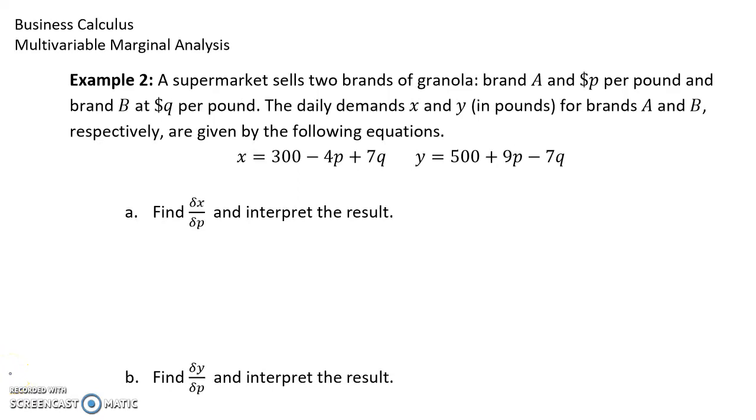In example two, we're provided with a supermarket that sells two brands of granola: brand A at P dollars per pound and brand B at Q dollars per pound. We're given two different functions that tell us about the daily demands for each of those two brands.